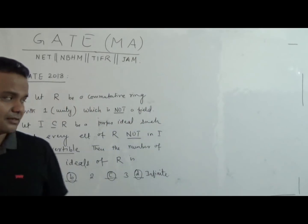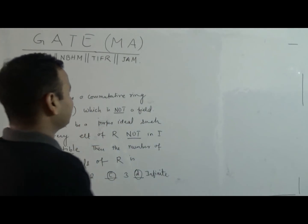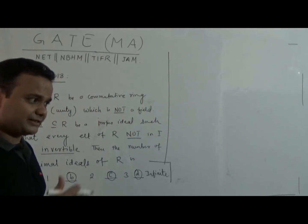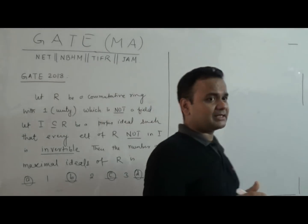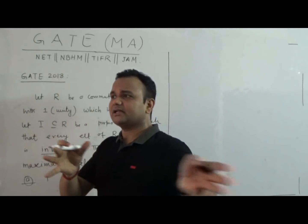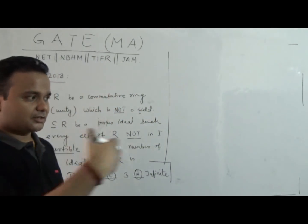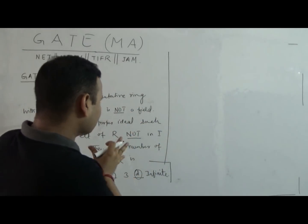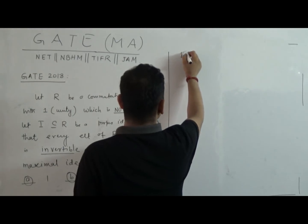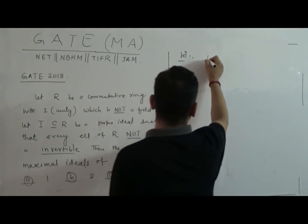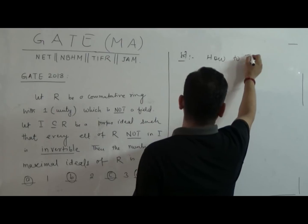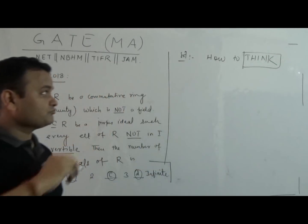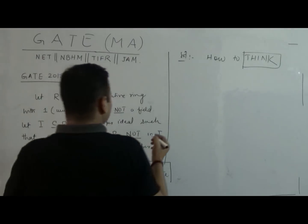I have already solved some notions related to asking how many maximal ideals there are when you have a collection of functions with coefficients from Z2 — please look at that video. But this particular question: how should one approach it? That's the problem.